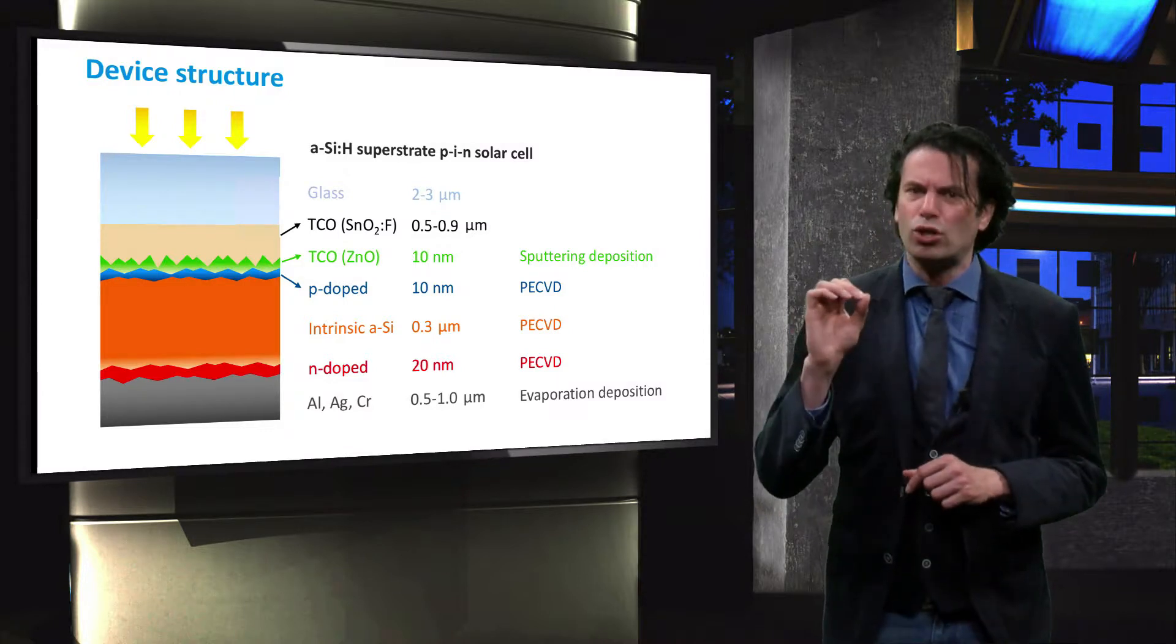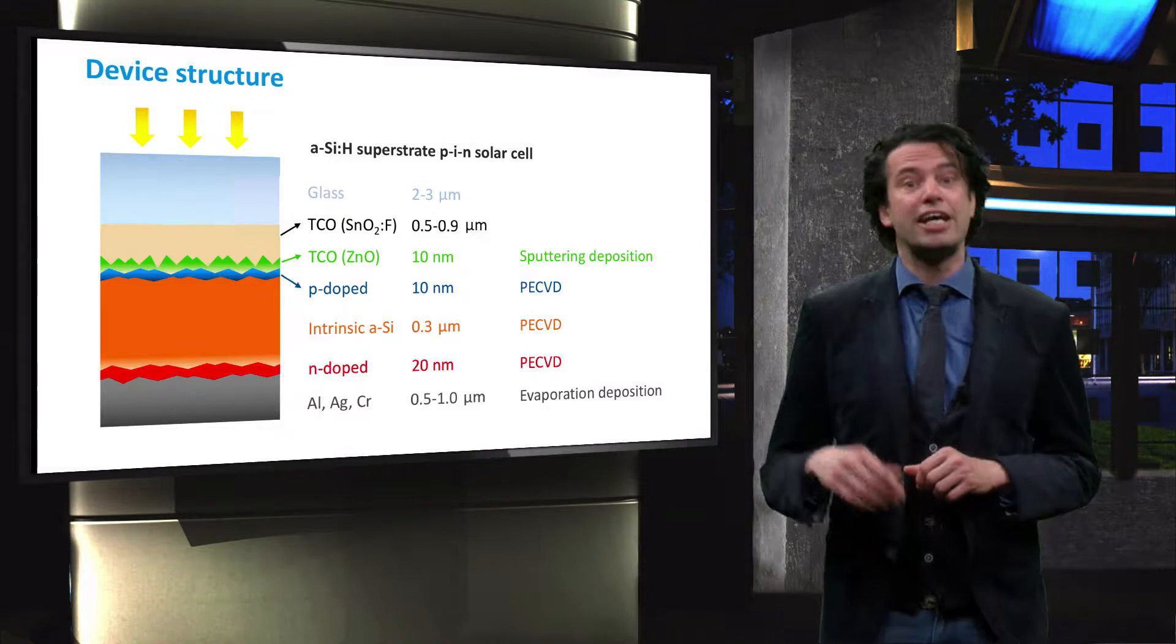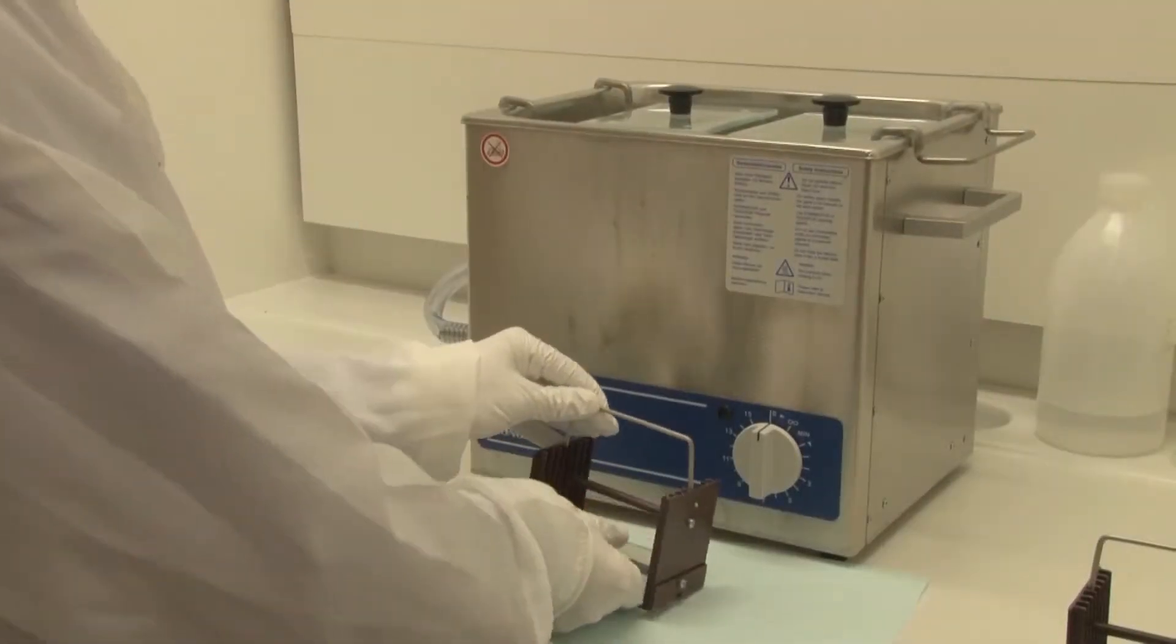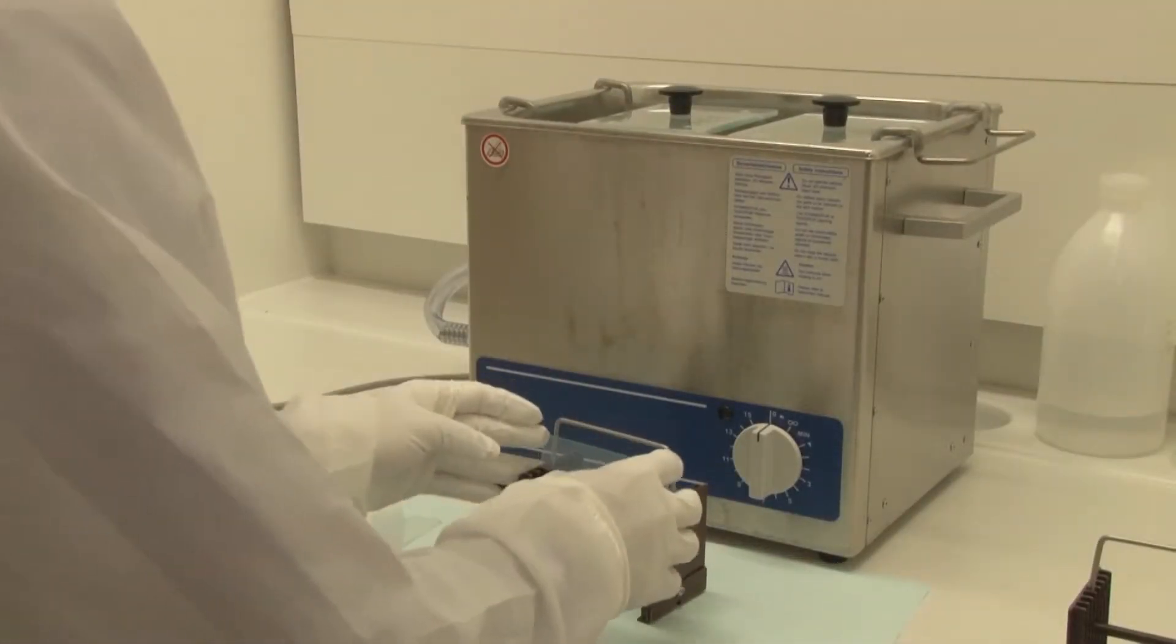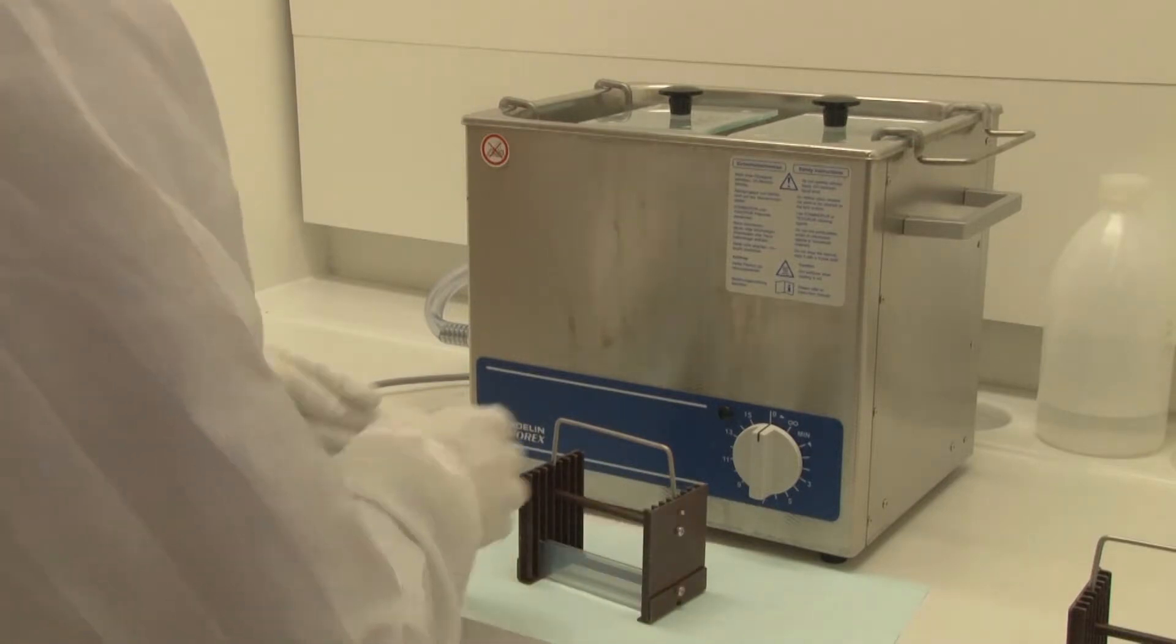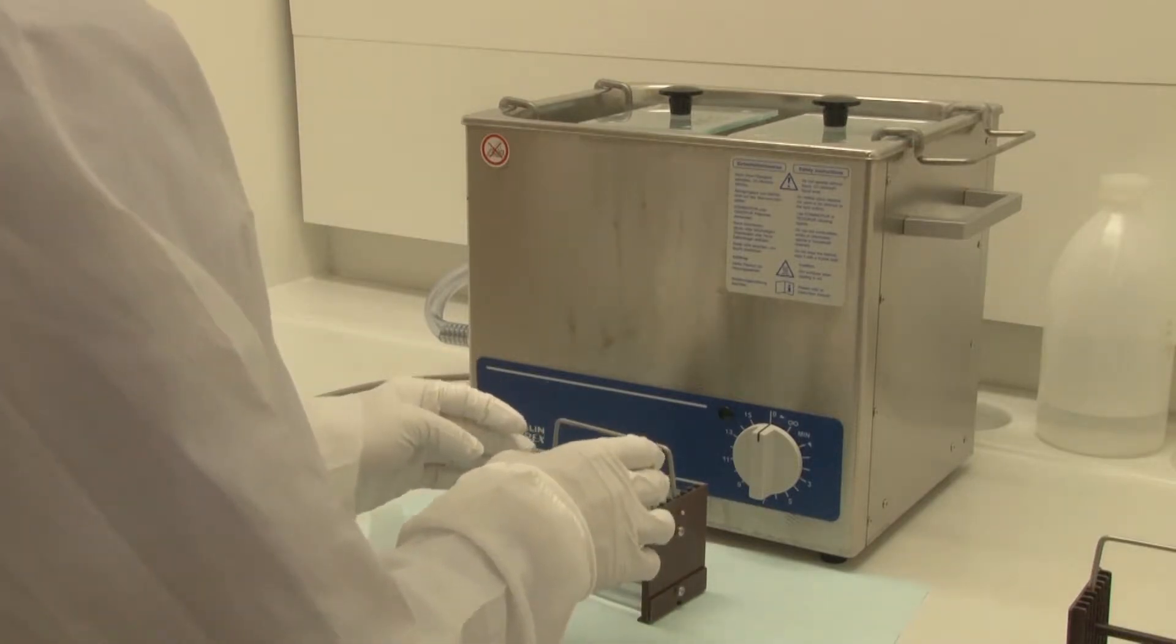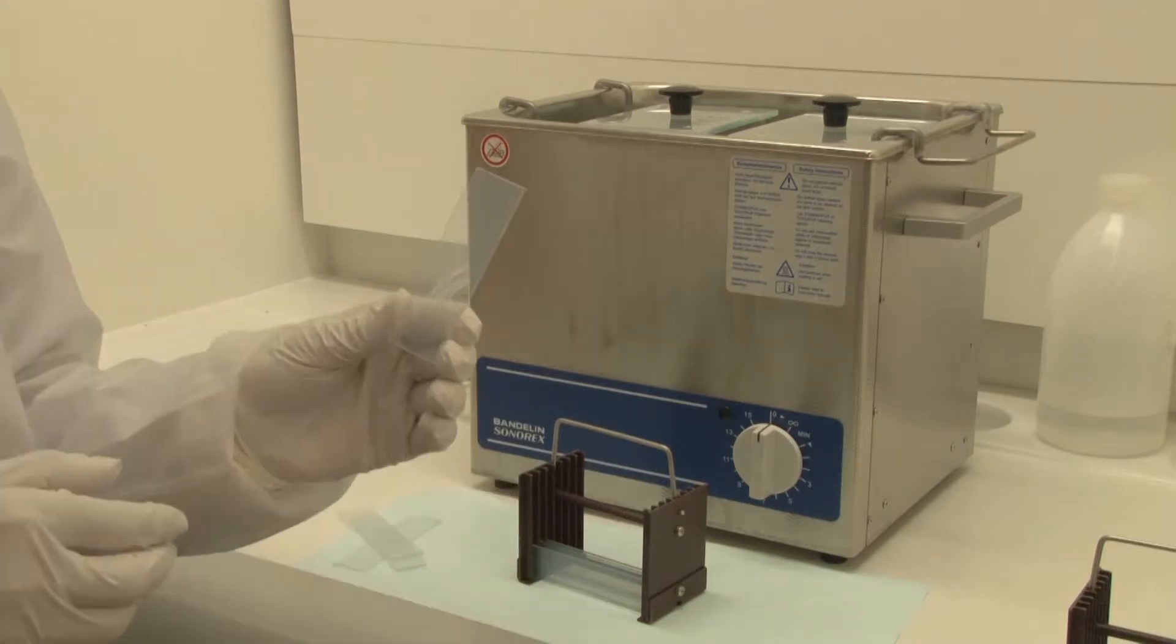We will now take a look at these processes in the lab. Let's go to the Dimes lab at the Delft University of Technology. We will show how thin-film silicon solar cells are made on lab scale.